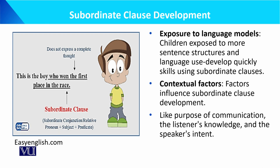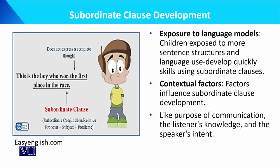For example: 'This is the boy who won the first place in the race.' Here the subordinate clause is 'who won the first place,' and by combining both the main clause and the subordinate clause, the complete sentence is formed.